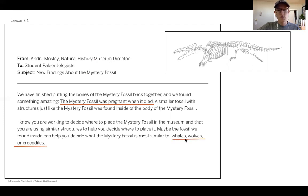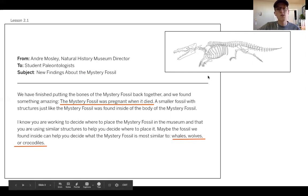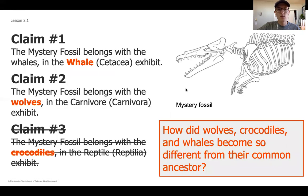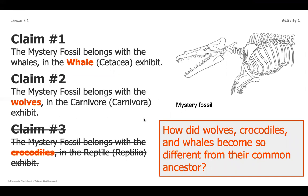So what that told us was: if we're looking at whales, wolves, and crocodiles to figure out which one is most closely related to this fossil, we were able to start narrowing down our claims. We had originally thought the mystery fossil might be related to a whale or a wolf. But the new evidence — that the mystery fossil was pregnant, meaning it gave birth to a live animal — made it less likely to be related to the crocodile, because crocodiles don't give live birth. In fact, crocodiles are hatched from eggs.